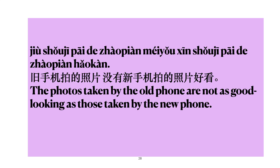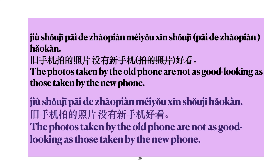One more example: 旧手机拍的照片，没有新手机拍的照片好看 — The photos taken by the old phone are not as good looking as those taken by the new phone. Since 拍的照片 is repeated, you can skip it, and it becomes: 旧手机拍的照片没有新手机好看。